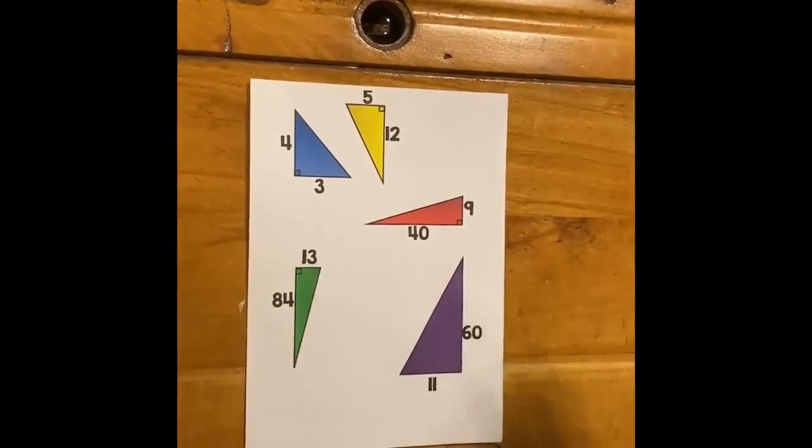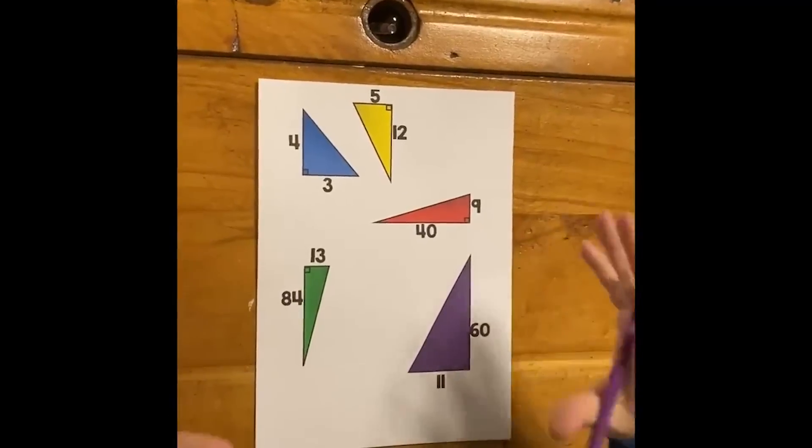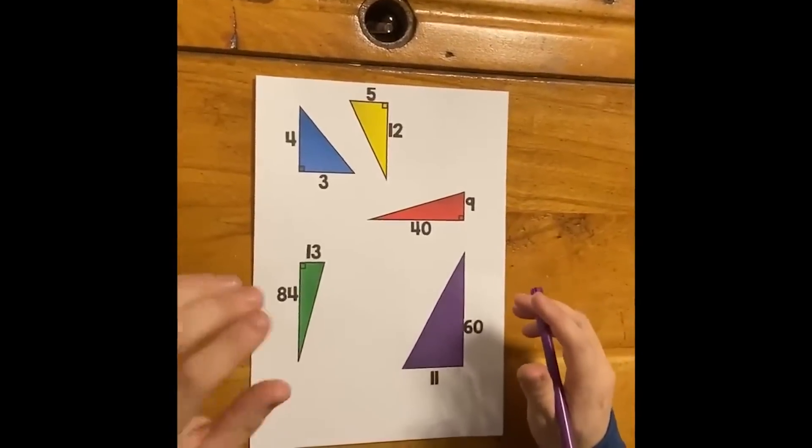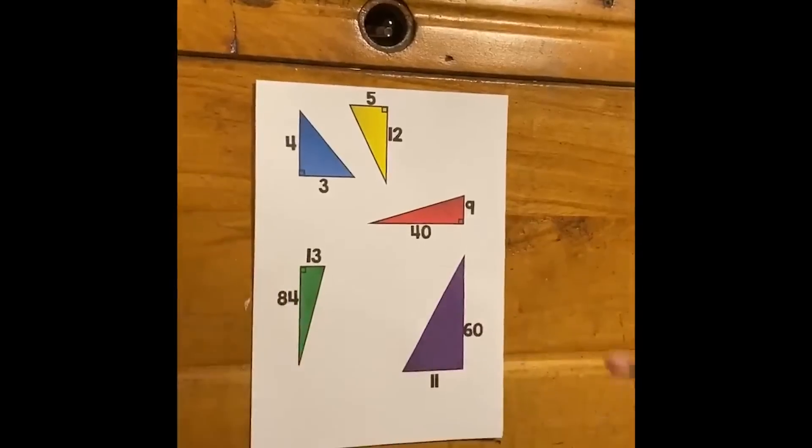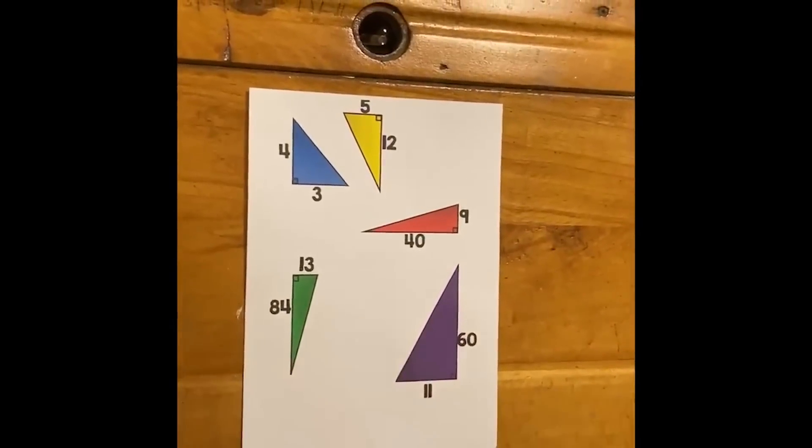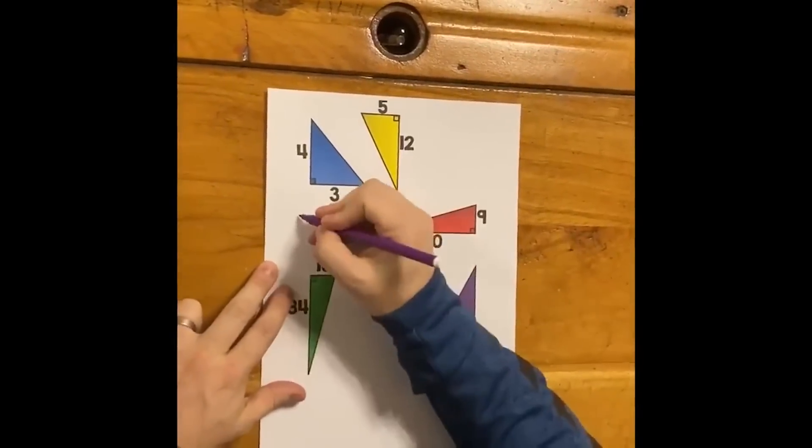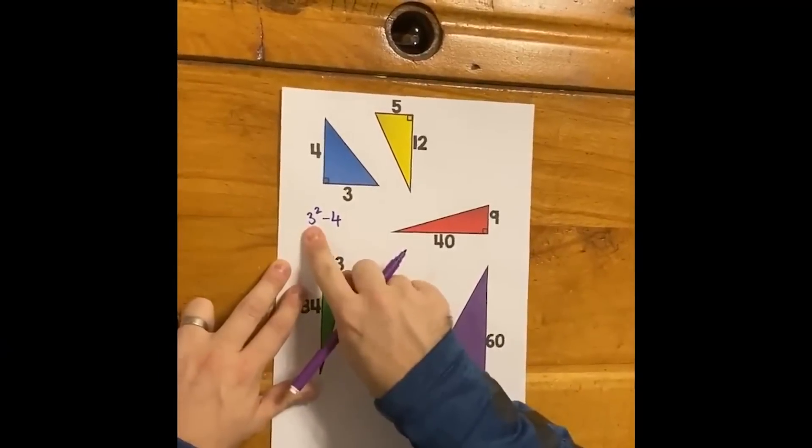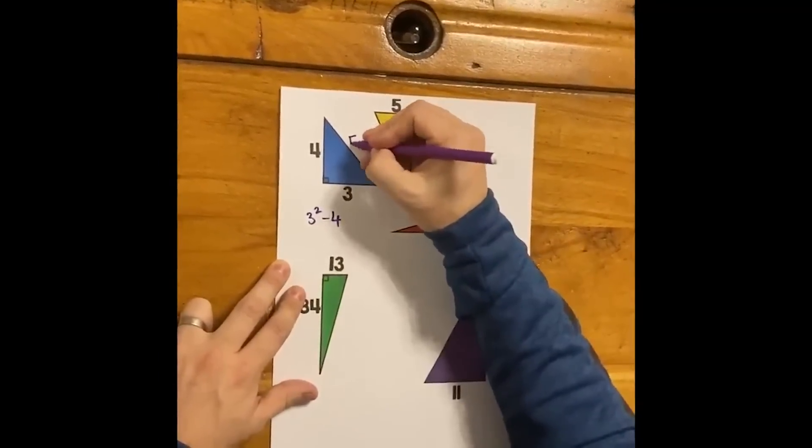So here's some examples using some famous Pythagorean triples. Usually for the Pythagoras theorem you'd be squaring sides and adding them together to get the hypotenuse, but if you're looking for the hypotenuse just take the smallest side, for example 3, square it, take away the other side. 3 squared is 9, take away 4, it's 5. Boom!